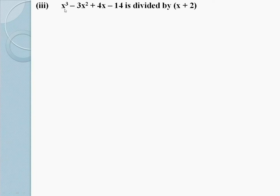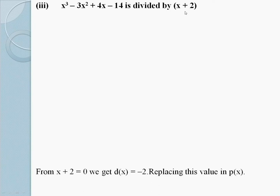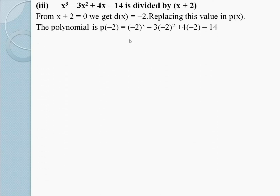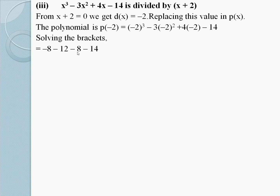Part 3: x³ - 3x² + 4x - 14 is divided by x + 2. From x + 2 = 0, we get x = -2. Replacing this value in P(x): P(-2) = (-2)³ - 3(-2)² + 4(-2) - 14. Solving the brackets: -8 - 12 - 8 - 14 = -42. So -42 is the remainder, which is the required answer.